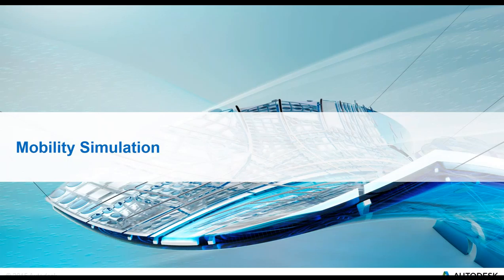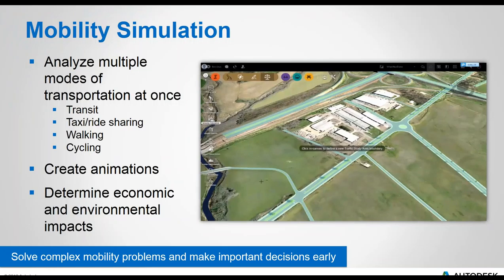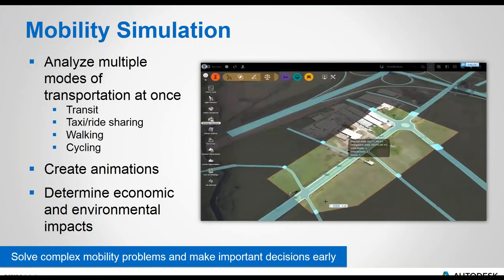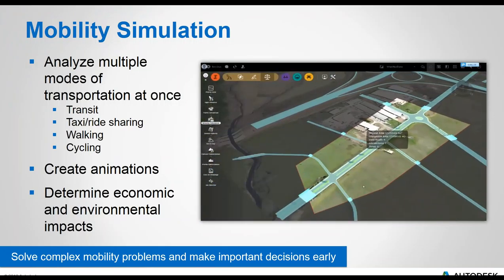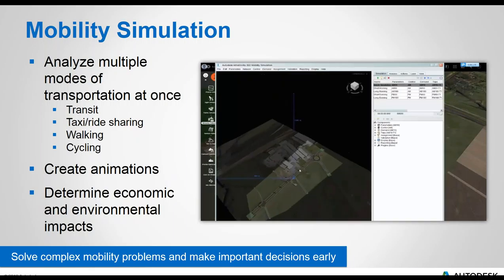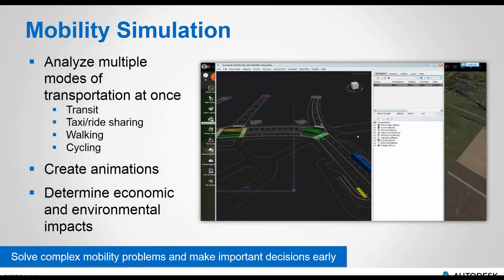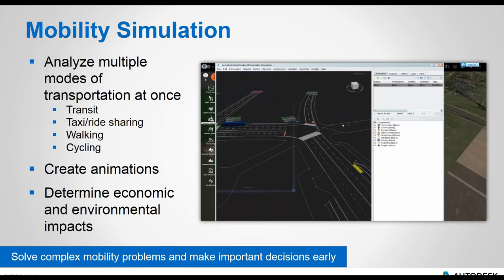Now let's look at mobility simulation — an entirely new feature set in InfraWorks 360. Mobility simulation allows you to analyze multiple modes of transportation at once, including taxis, transit, ride sharing, walking, and cycling. You can create animations to help communicate your results with others. This tool will help you determine economic and environmental impacts and make decisions earlier in your projects, really expanding on the whole traffic analysis capability.